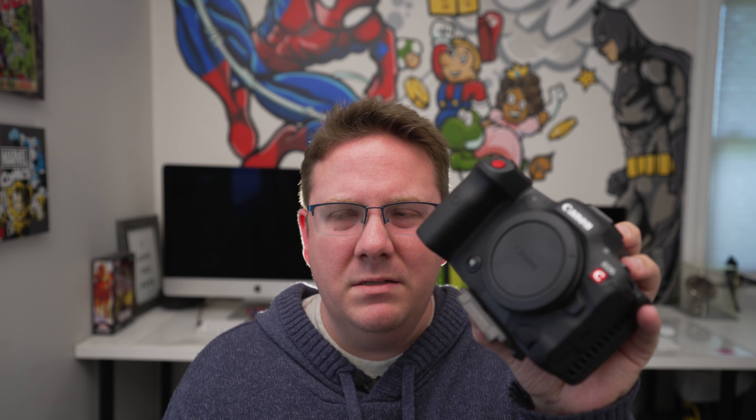Here we have a brief overview of specs between the R5C and the A1. The R5C does 8K internally in three flavors of raw: Light, Standard, and HQ. However, if you're recording in HQ raw, be aware that you're only going to be able to record that in Super 35 mode. The A1 gives you 8K in an XAVC format with H.265 compression — 4:2:0 color up to 30 frames per second — at either 200 or 400 megabits per second.